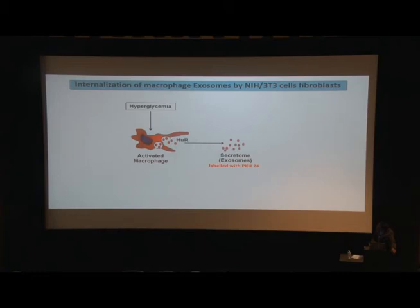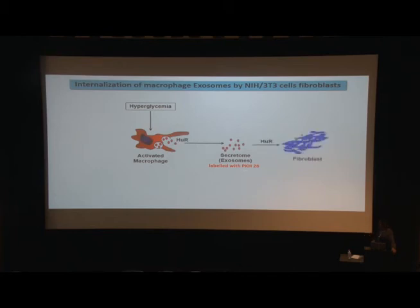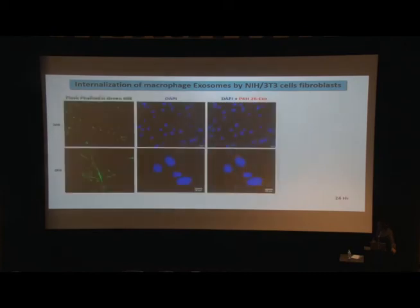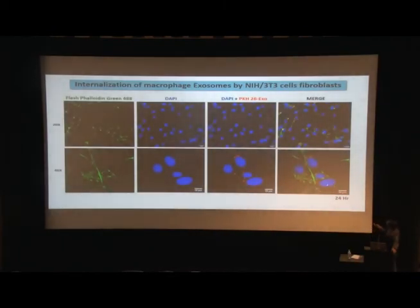To study the interaction with fibroblasts — in this case NIH 3T3 cells — we collected exosomes from macrophages treated with high or low glucose, labeled them with PKH26, and applied them to fibroblasts. The fibroblasts were able to take up all of those exosomes. PKH26 in red marks the exosomes, and fibroblasts are marked with phalloidin.